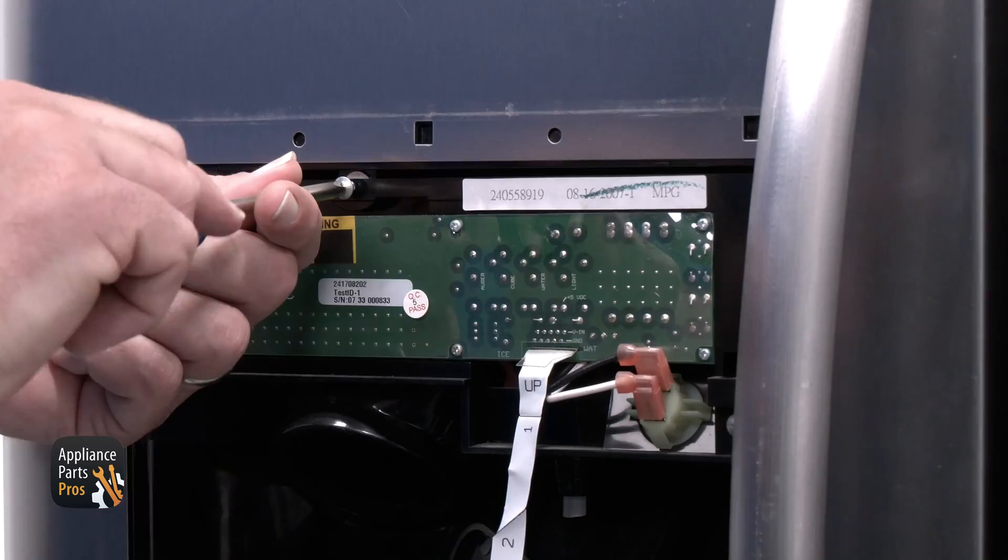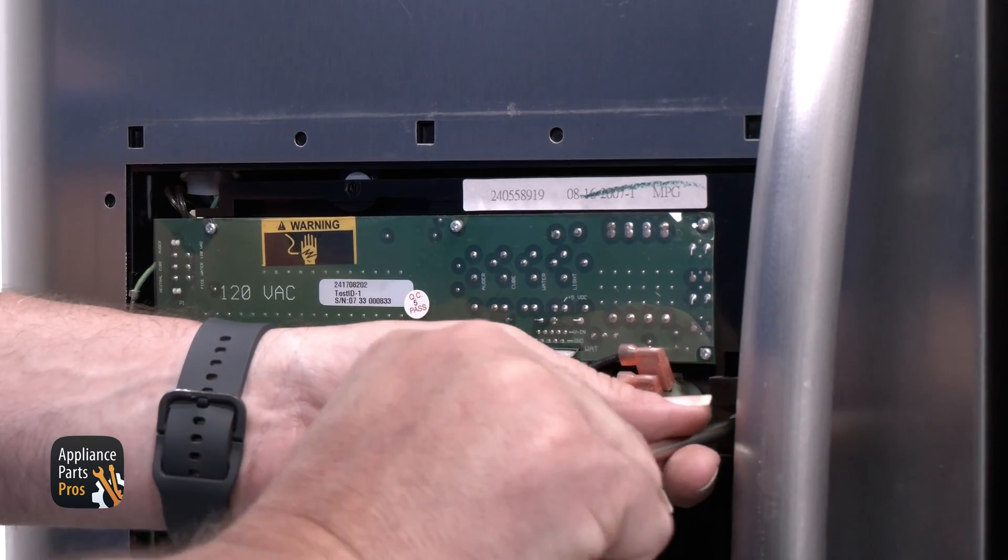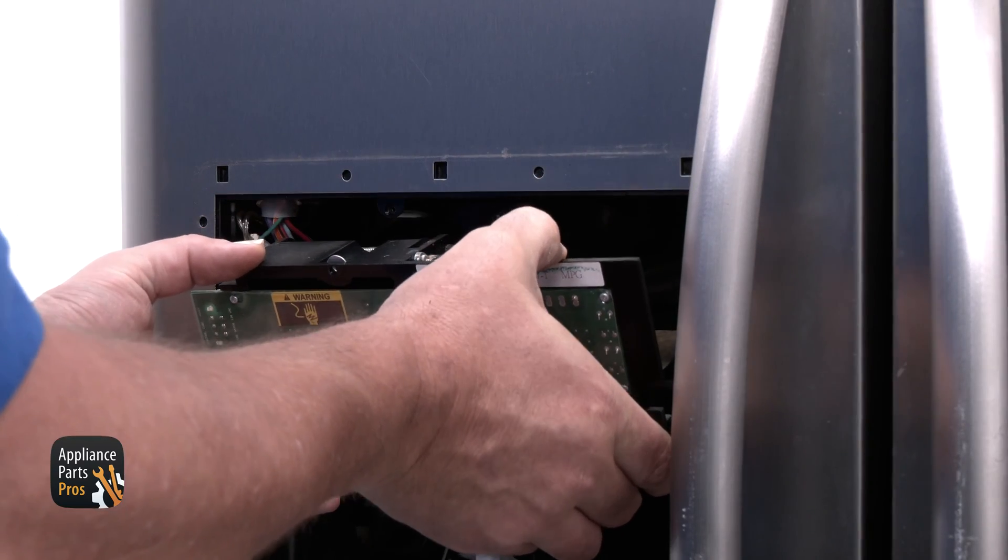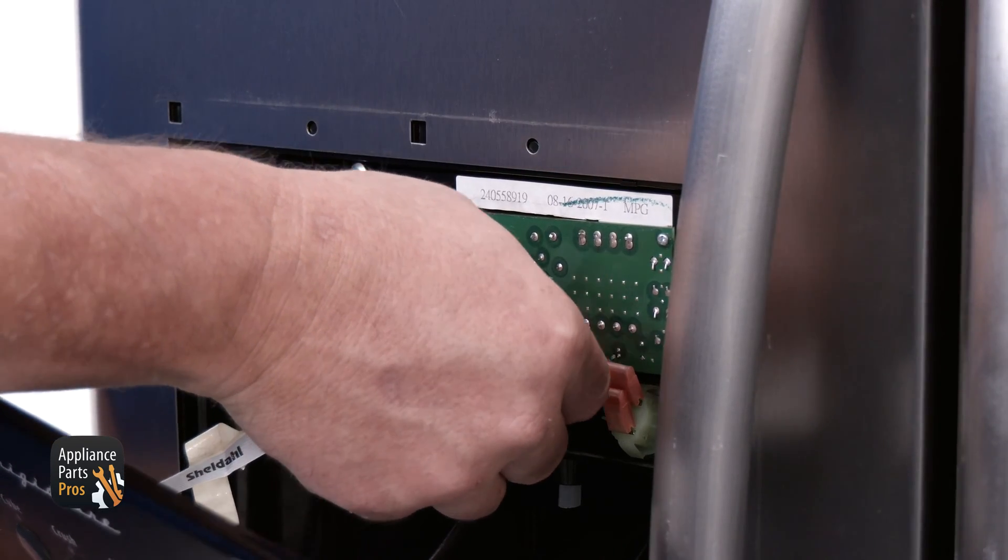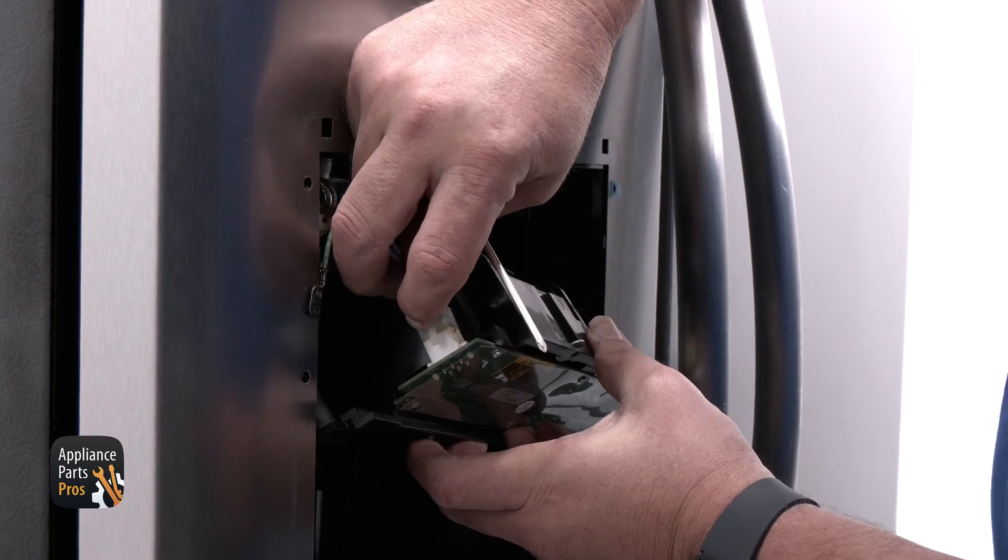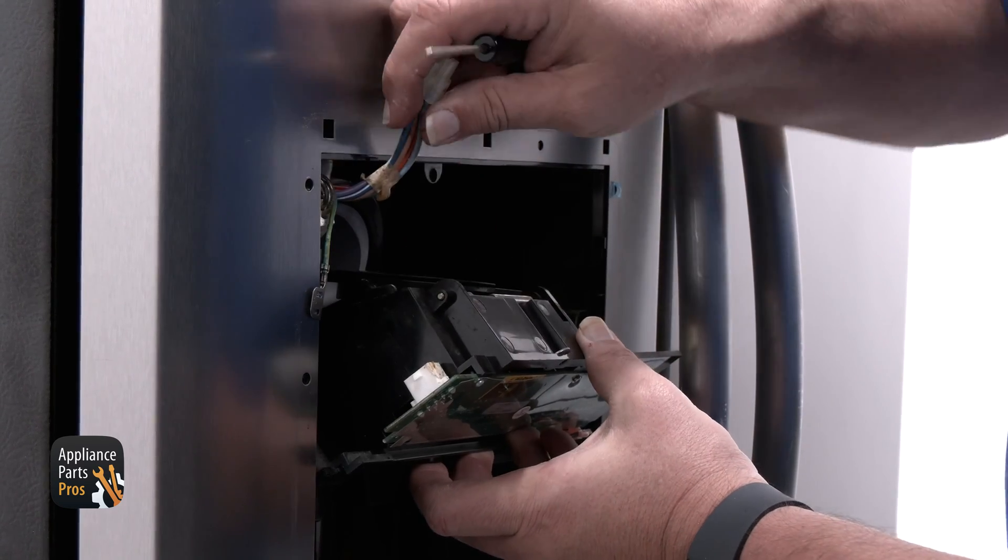You'll need to remove the three screws holding the dispenser housing in place and slide it out. Then disconnect the ribbon cable for the switchboard. Once it's out, disconnect the wire harness for the freezer door.